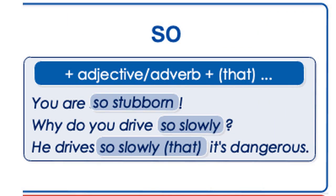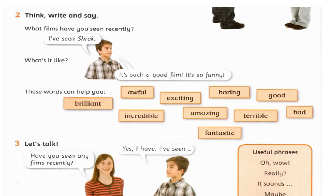Now, 'so': 'You are so stubborn.' 'Why do you drive so slowly?' 'He drives so slowly that it's dangerous.' We use 'so' before an adjective only or an adverb. So: after 'such a' — adjective plus singular countable noun; after 'so' — adjective only. For example: 'It's such a good film' versus 'It's so funny.' Funny here is adjective only.